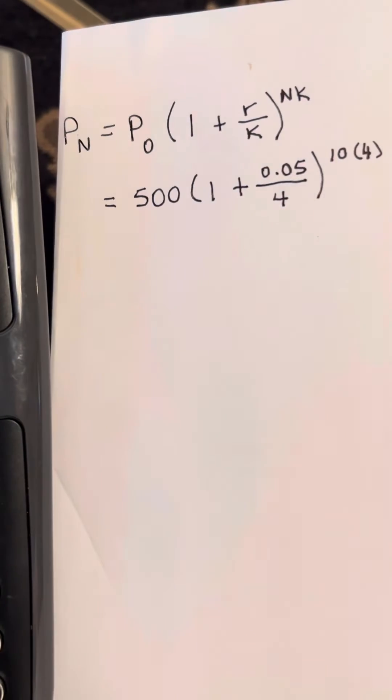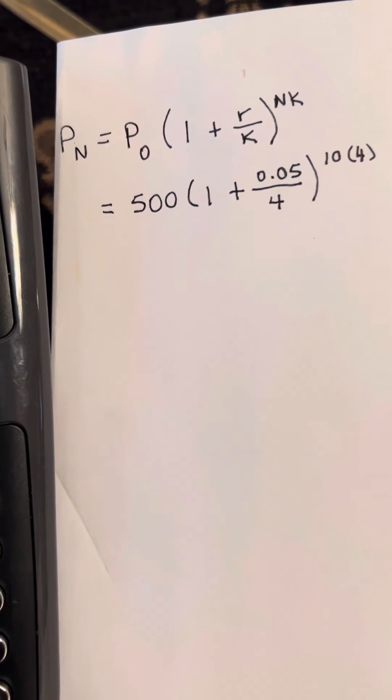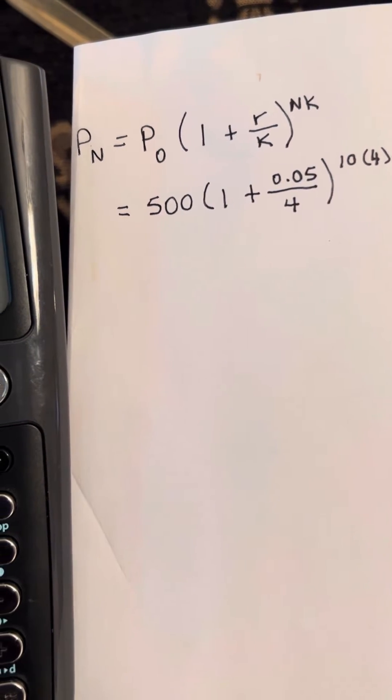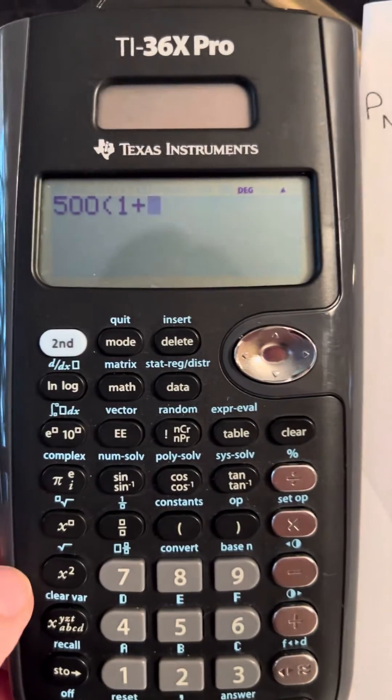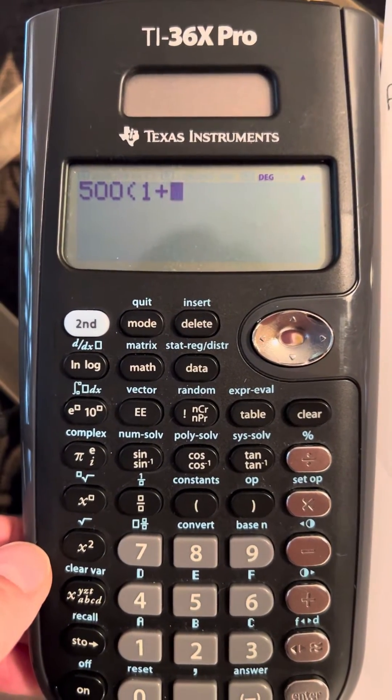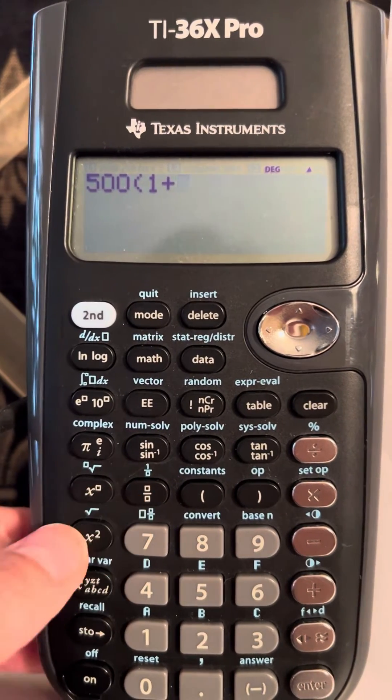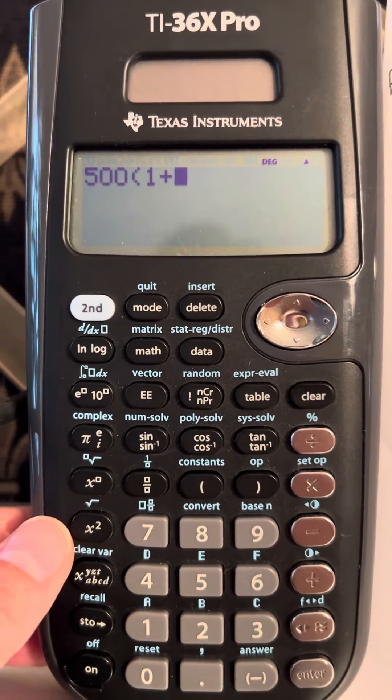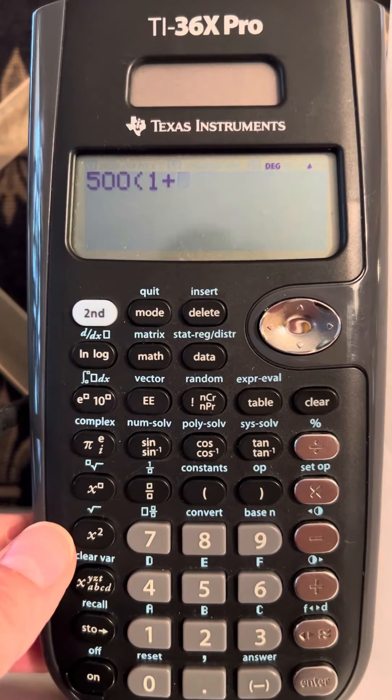Now we have a fraction. We have the 5% changed to a decimal, which is 0.05 or five hundredths. On this TI-36X Pro calculator, this is a button right here above the 7 that we're able to just put a fraction into our calculator.